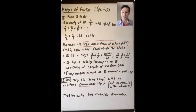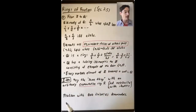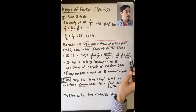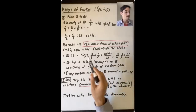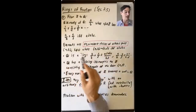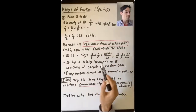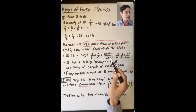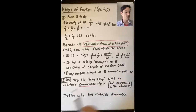You can put a ring structure on this set of equivalence classes of ordered pairs by defining addition and multiplication the way you think about addition and multiplication of rational numbers. Writing the equivalence class of (a, b) as a over b: a over b plus c over d is ad plus bc over bd, and the product is ac over bd.